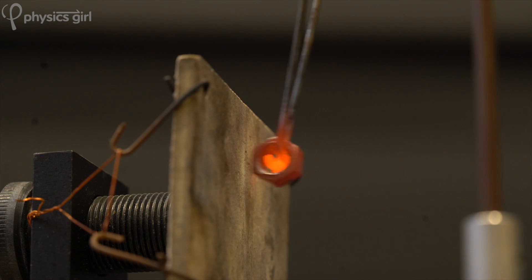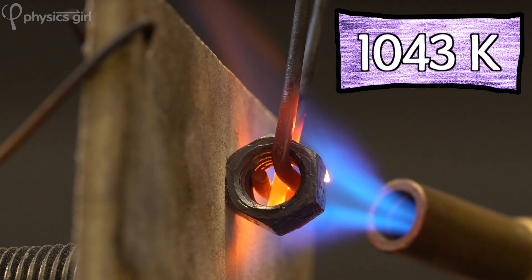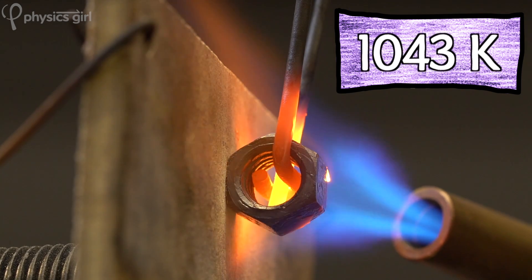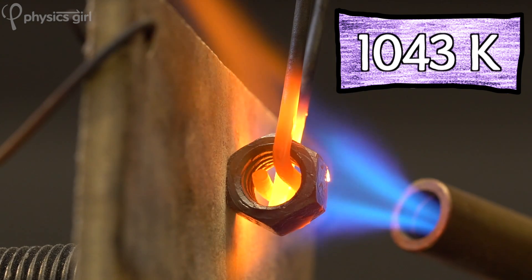The curie point of iron is around 1,043 Kelvin, which is, incidentally, around the temperature when iron starts to get hot enough to emit visible light, which is why it's glowing here. I really enjoy these demonstrations. And we tried some other demonstrations and some other stuff with these demos.